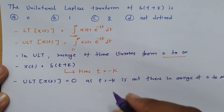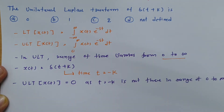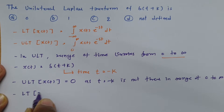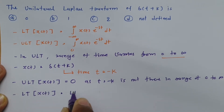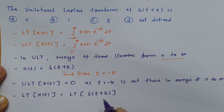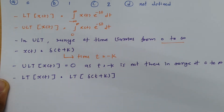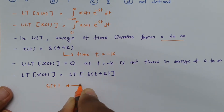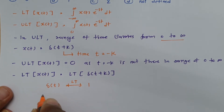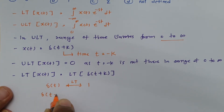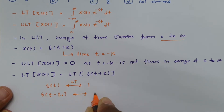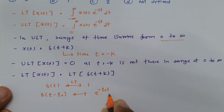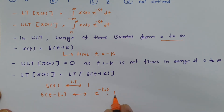Now, what if the question asks for the bilateral Laplace transform of δ(t+k)? For that, we can apply two properties: the time-shifting property and the Laplace transform of δ(t). We know that the Laplace transform of δ(t) is 1. As per the time-shifting property, δ(t − t₀) gives e^(−t₀·s).